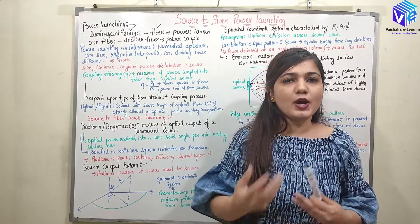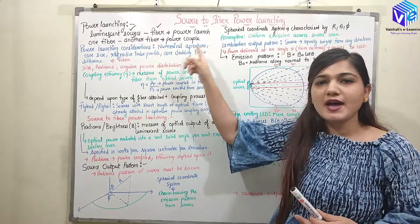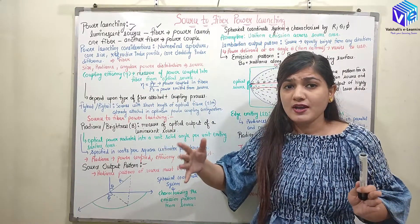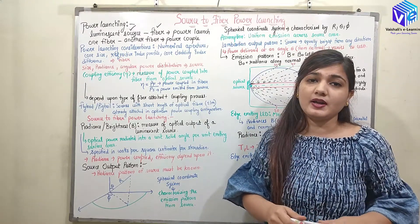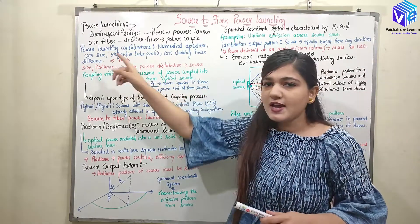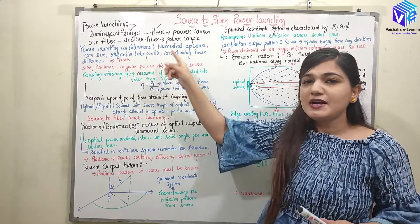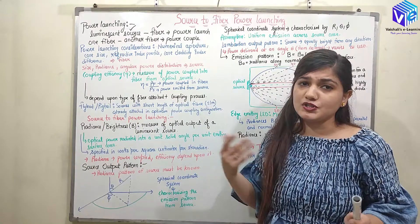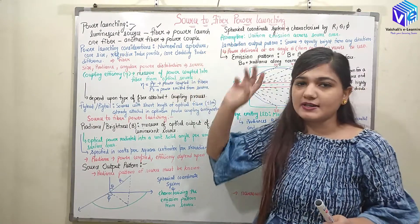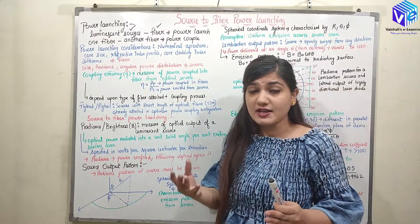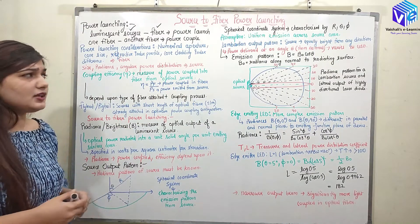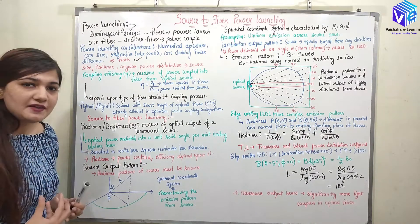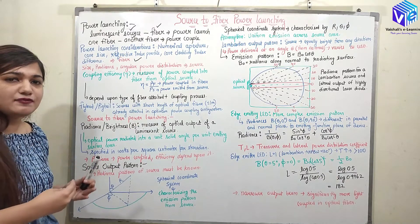We have some basic considerations on which power launching and power coupling are based. For the fiber: first, the numerical aperture; second, the core size (radius of the core); third, the refractive index profile; and fourth, the core-cladding refractive index difference. Based on these parameters, the power coupling will change.